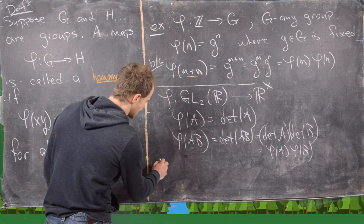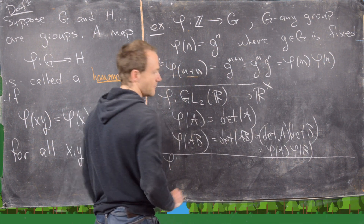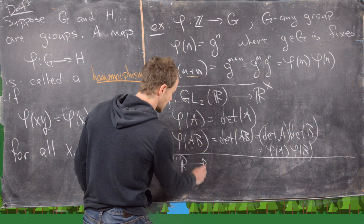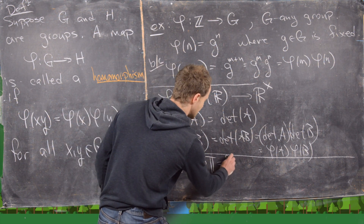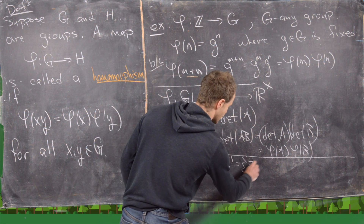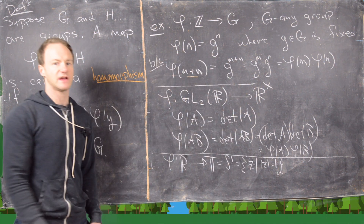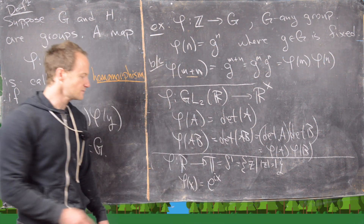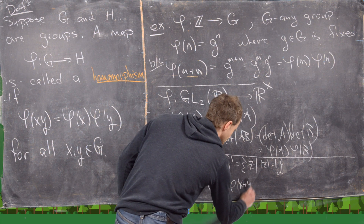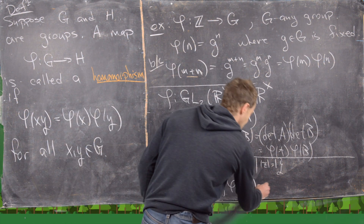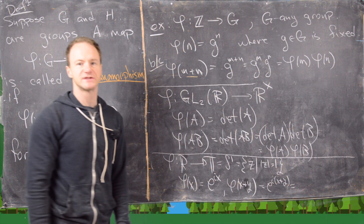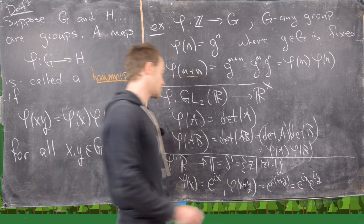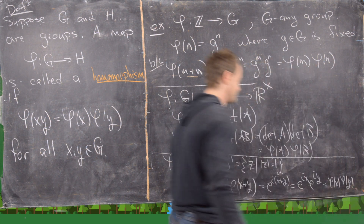One more example: let phi go from R with addition to the circle group T, also called S1, which is all complex numbers whose modulus is one — everything along the unit circle in the complex plane. Define phi of x equals e to the ix. We verify it's a homomorphism: phi of x plus y equals e to the i(x+y), and by exponent rules that equals e to the ix times e to the iy, which is phi of x times phi of y.